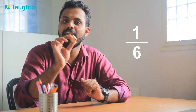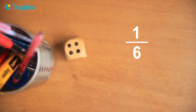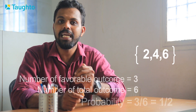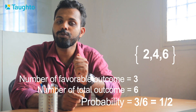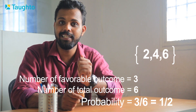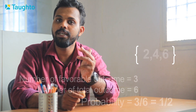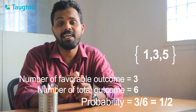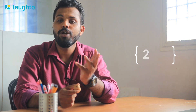The probability of getting an even number — that is, 2, 4, 6 — is three by six, or one by two. The probability of an odd number — 1, 3, 5 — is also three by six, or one by two. If you want prime numbers, they are 2, 3, 5, giving a probability of three by six, or one by two.